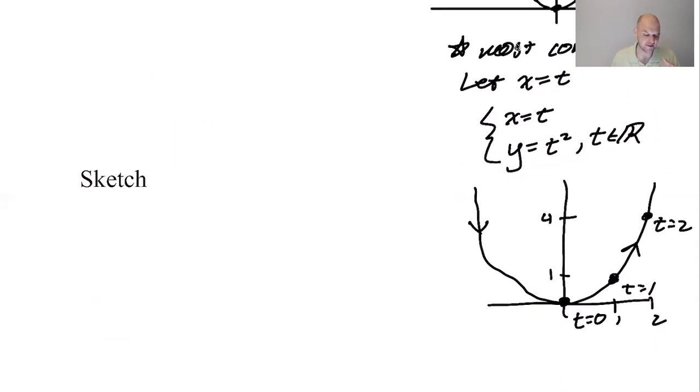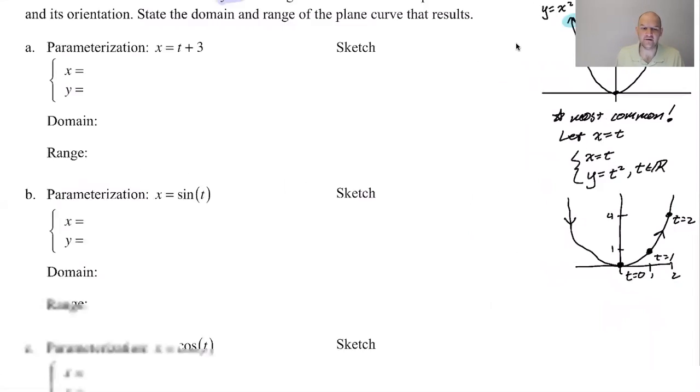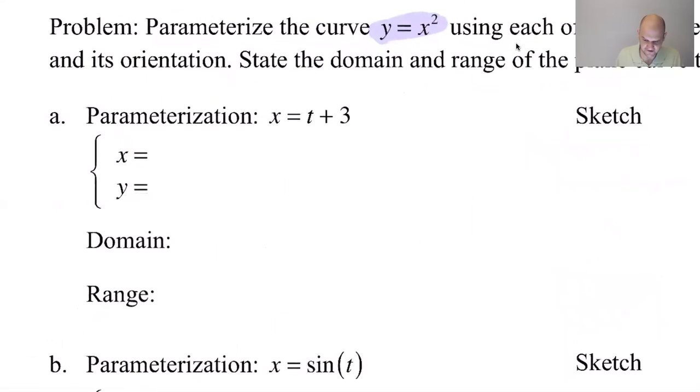That's the simplest parameterization for basically anything. If you have a function, y equals f of x, just let x equal t. Now you have y equals f of t. Parametrics are t comma f of t. You're good to go. That's the most basic thing. But who wants to be basic?